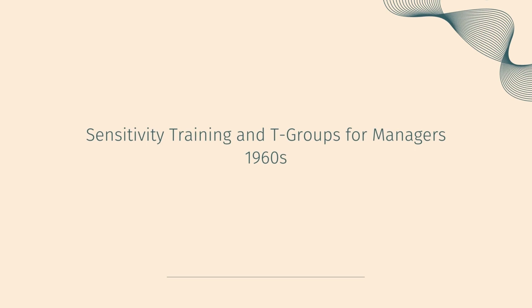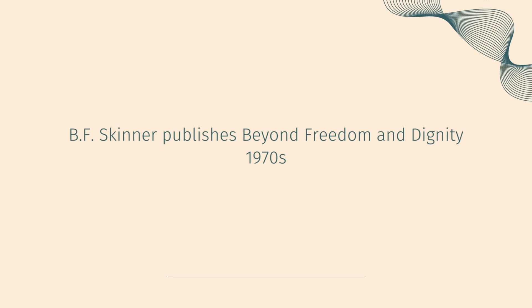The 1960s were characterized by the passage of several major pieces of civil rights legislation, which focused the attention of HR professionals on developing fair selection techniques. As a result, the need for I.O. psychologists greatly increased. The 1960s were also characterized by the use of sensitivity training and T-groups, or laboratory training groups, for managers. The 1970s brought great strides in the understanding of many organizational psychology issues involving employee satisfaction and motivation, and saw the development of many theories about employee behavior in organizations. B.F. Skinner's work such as Beyond Freedom and Dignity resulted in the increased use of behavior modification techniques in organizations.